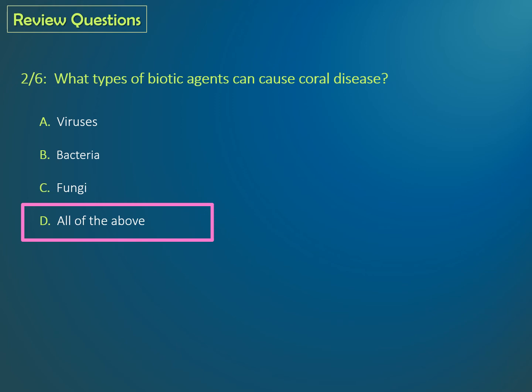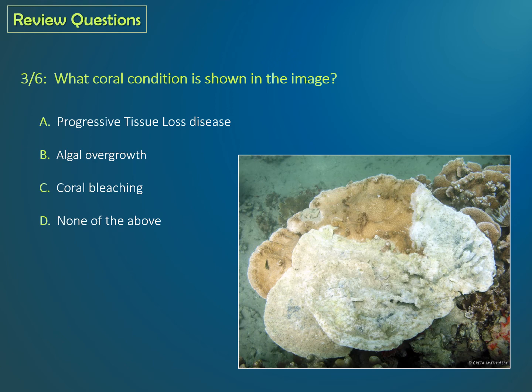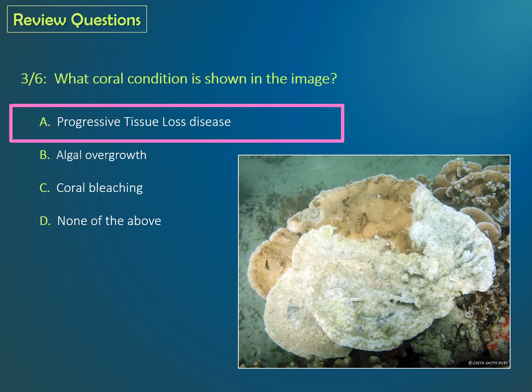Question 3: What coral condition is shown in the image? Is it A, progressive tissue loss disease; B, algal overgrowth; C, coral bleaching; or D, none of the above? If you said A, progressive tissue loss disease, you are correct.